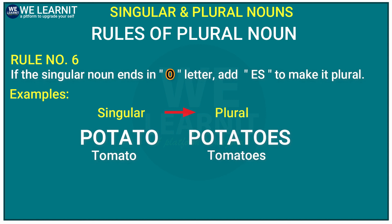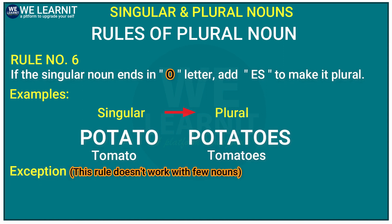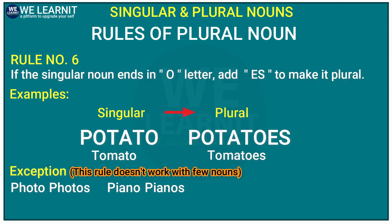But here also we have some exceptions, where a few plural nouns will not follow this rule. For example, 'photo' ends with -o, and the rule says we should add -es, but we cannot write 'photoes'. Some people make this mistake. So 'photo' just becomes 'photos' — we add -s only. Similarly, 'piano' becomes 'pianos' and 'zero' becomes 'zeros'.